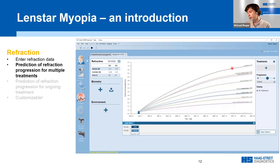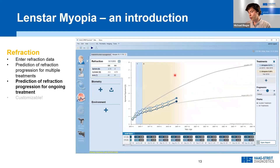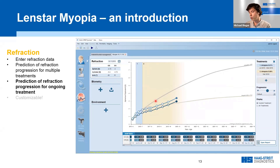Other curves show projections for different treatments such as atropine or ortho-K, showing a slowdown of myopia progression. When a patient has been followed for several years — here almost six years — you see the actual refraction measurements in blue overlaid with different treatment projections such as atropine 0.05%. The software also shows what the projection would look like without treatment, which would end up at minus 7 diopters, versus the projected outcome for the ongoing atropine treatment through adulthood.